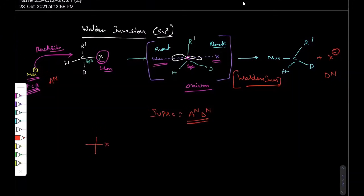If the leaving group is the first priority or the top priority on the existing chirality, if according to CIP, if this is the first priority here, and the incoming nucleophile is also the first priority.